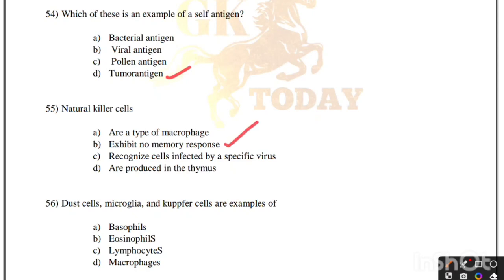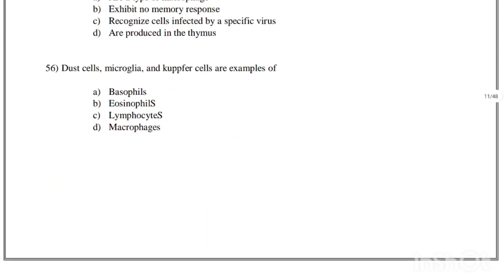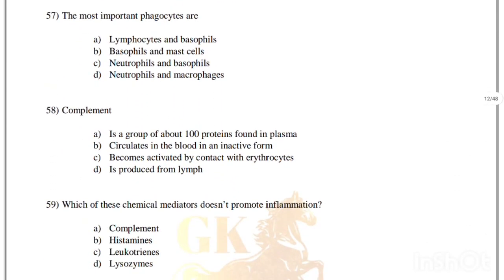Dust cells, microglia and Kupffer cells are examples of macrophages — option D, macrophages is the right answer. The most important phagocytes are: lymphocytes and basophils, basophils and mast cells, neutrophils and basophils, or neutrophils and macrophages. Correct answer is option D, neutrophils and macrophages.